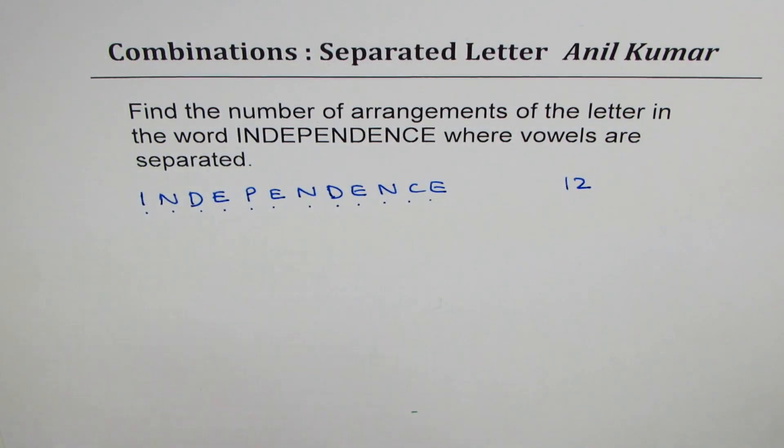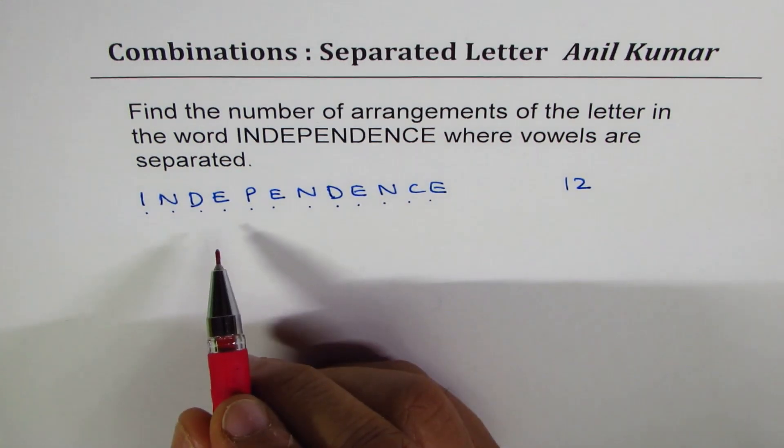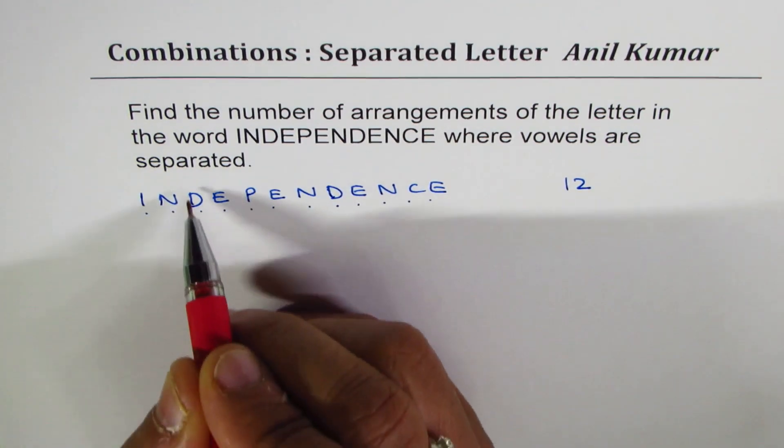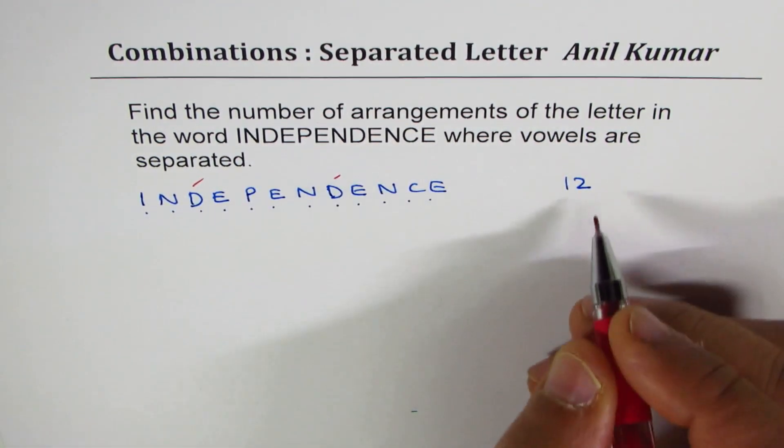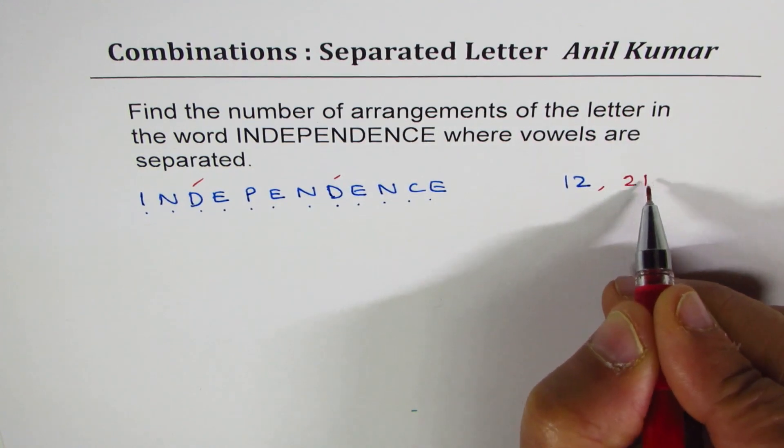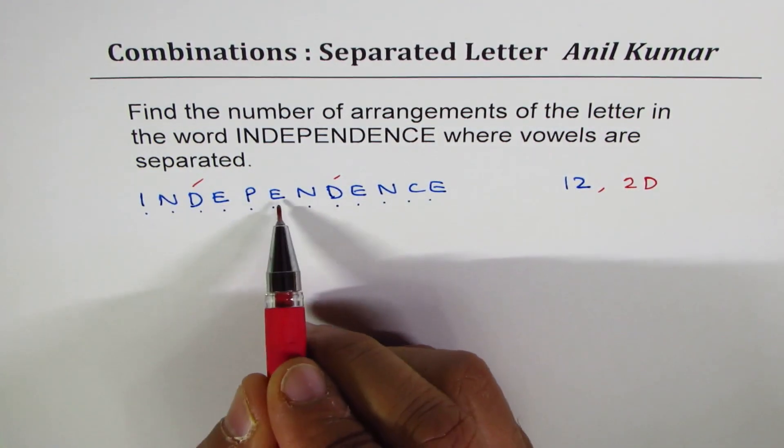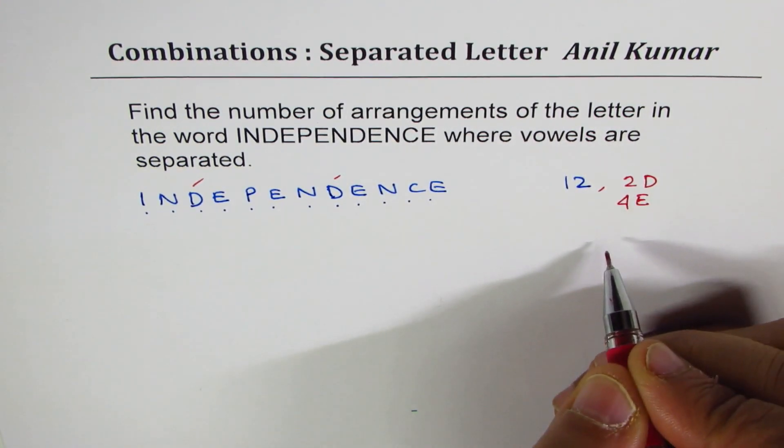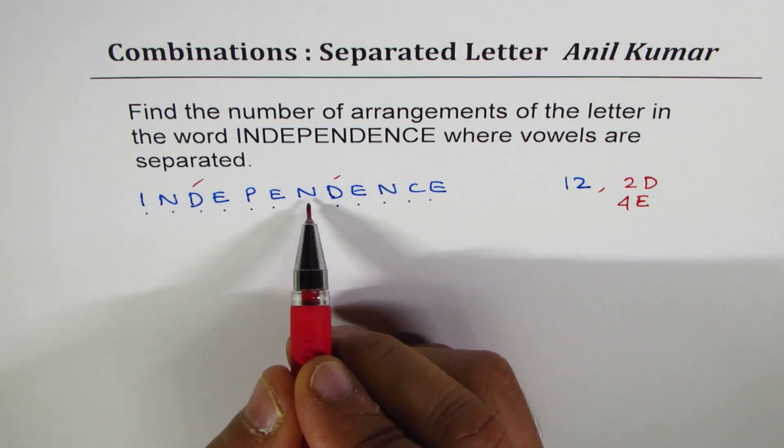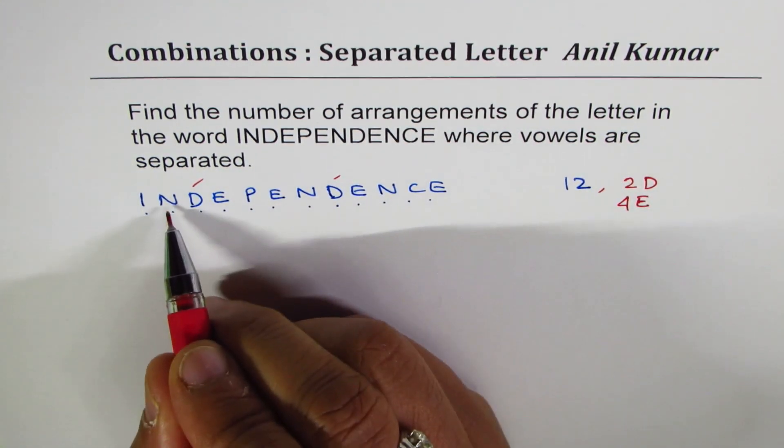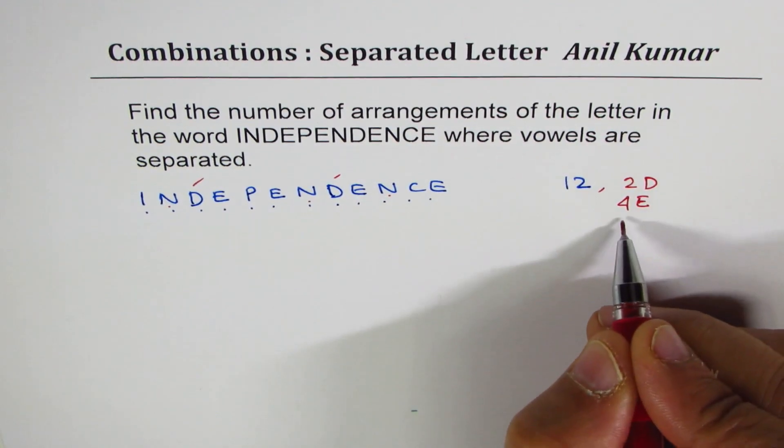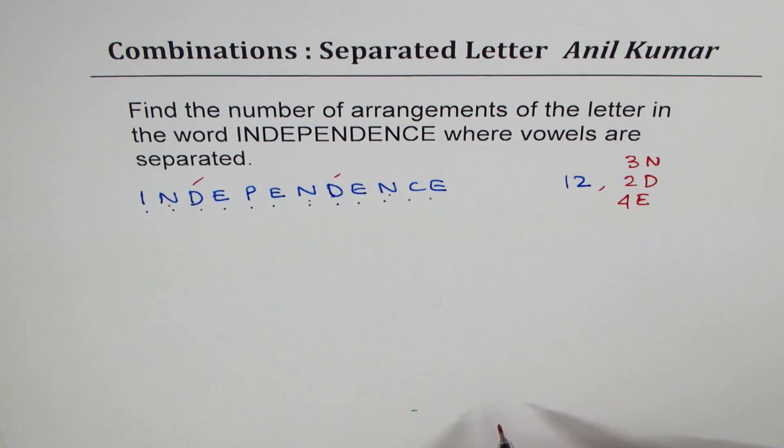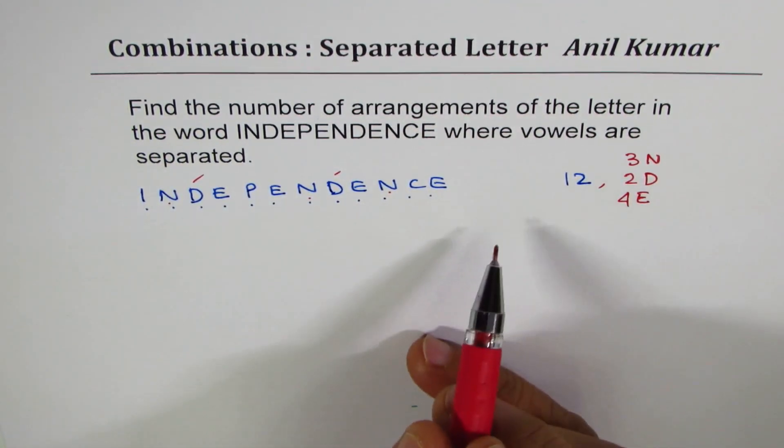Out of which, we have to see how many repeat. Let's count. D's come first, so we have 2 D's. And E, we have 4 E's. And N, how many N's? We have 3 N's. So, these are the letters which are repeated. There are 12 in all.